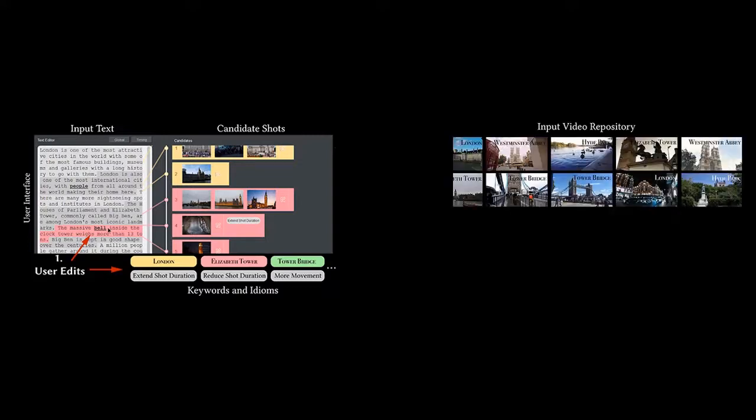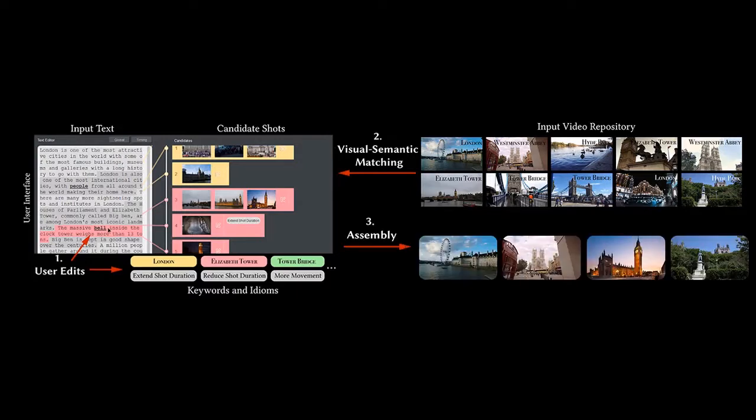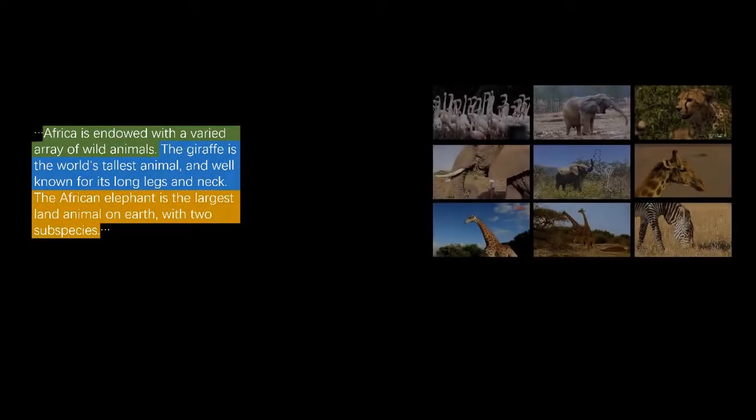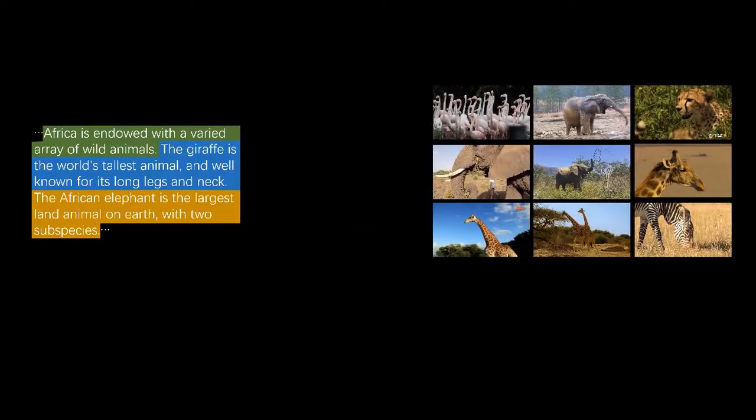First, the user mostly inputs and edits the text. Second, our method automatically searches semantically matched candidate shots from the video repository. And third, our method assembles the video montage. To match the visual content to the text, we break the text into segments and perform cascaded visual semantic matching between the text segments and video shots.